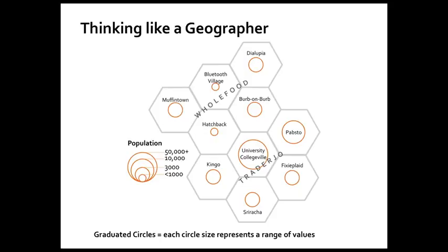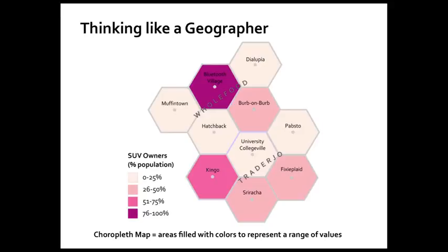Here's a choropleth map of similar data here. A choropleth map shows areas filled with colors to represent a range of values, sort of like the graduated circle map uses a circle size to indicate a range of values. You've seen these things a lot. You've already seen them in this class, actually, in lesson one with the female head of household map example. But here I've taken my fake data and I've made a choropleth map showing the percentage of the population that owns SUVs. So I've calculated those two things against each other, and I've tried to make categories that make sense here, 0 to 25 percent, 25 to 50, etc. And right away, you can see that there are some places that are in the lowest category, like Pabstow and Hatchback, University Collegeville, and there's only one place that's in the very highest category. That's Bluetooth Village, where over 75 percent of the population also owns an SUV.